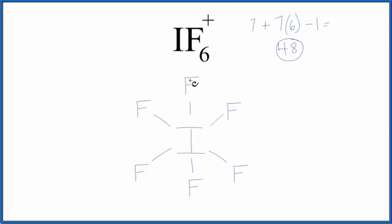I've put 2 between each fluorine and the central iodine here. So we've used 2, 4, 6, 8, 10, 12. That's 12 used, we have 48 total, so we have 36 more valence electrons to distribute around the Lewis structure.